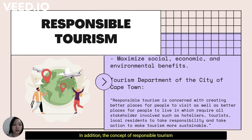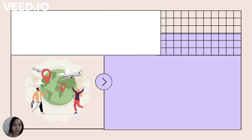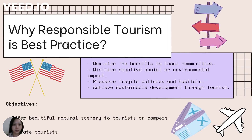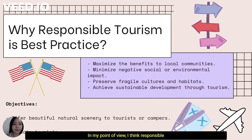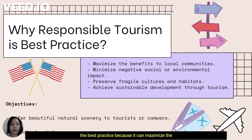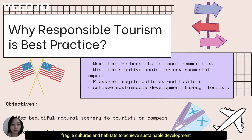The concept of responsible tourism is where everyone needs to play their role in making tourism safer. In my point of view, I think the responsible tourism practice developed by NPS is recognized as the best practice because it can maximize the benefits to local communities and minimize negative social or environmental impact, helping local people to preserve fragile culture and habitat to achieve sustainable development through tourism.